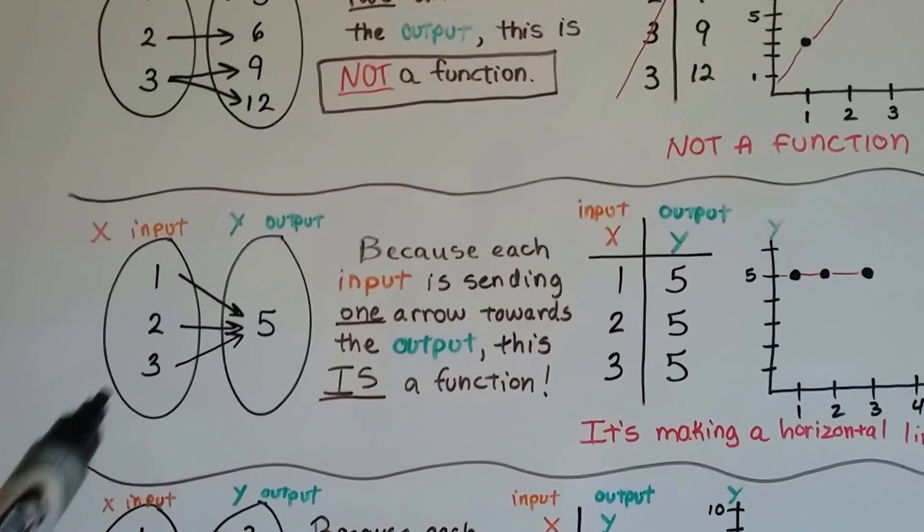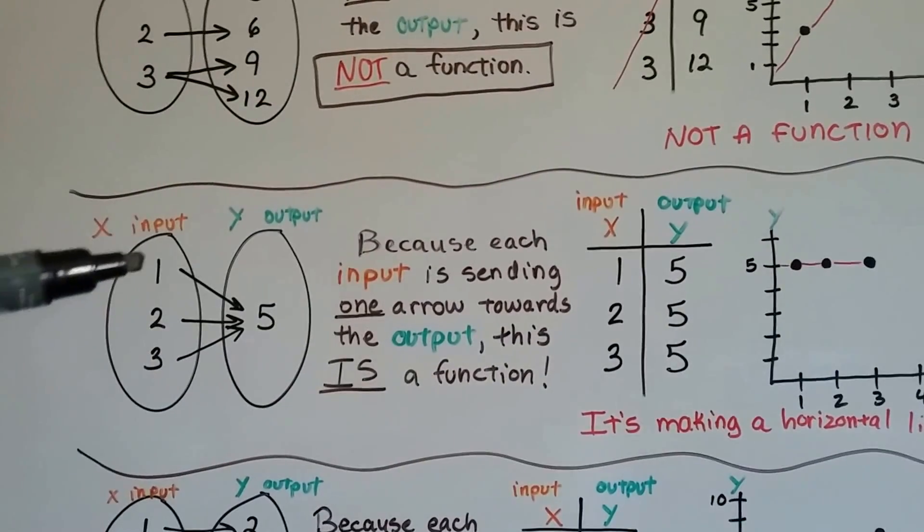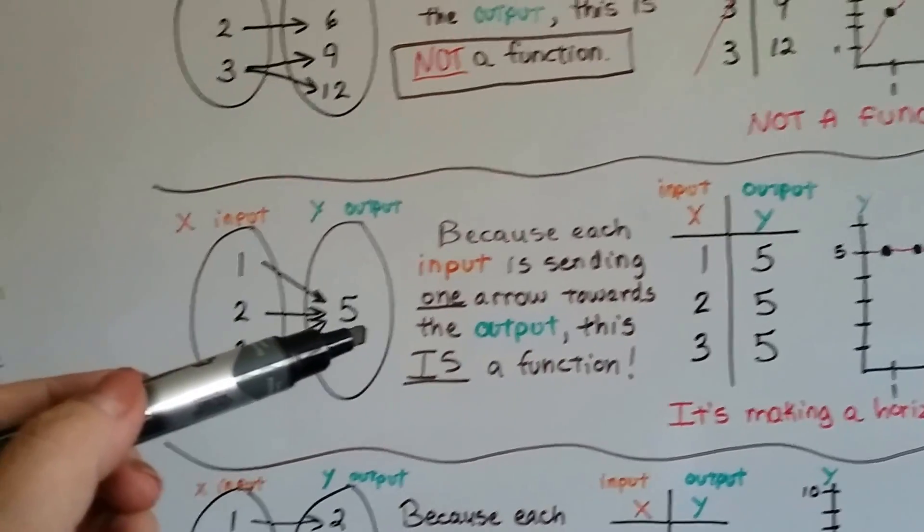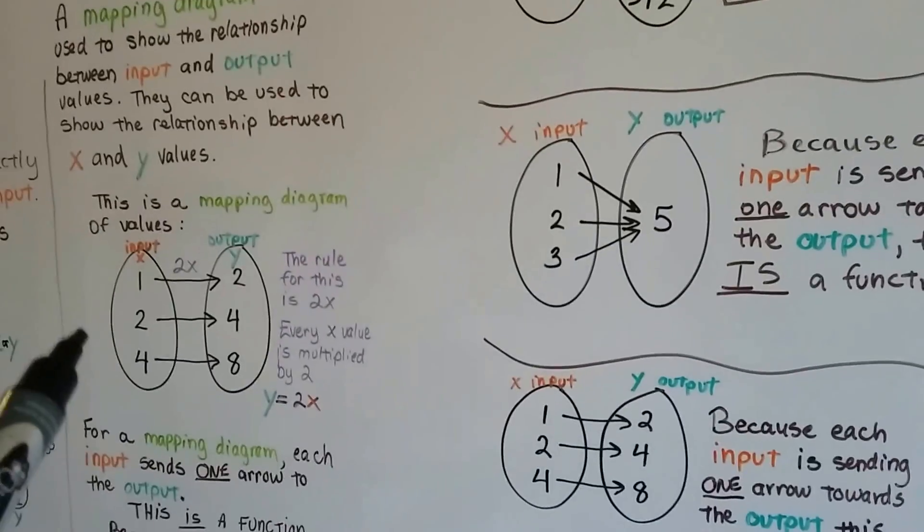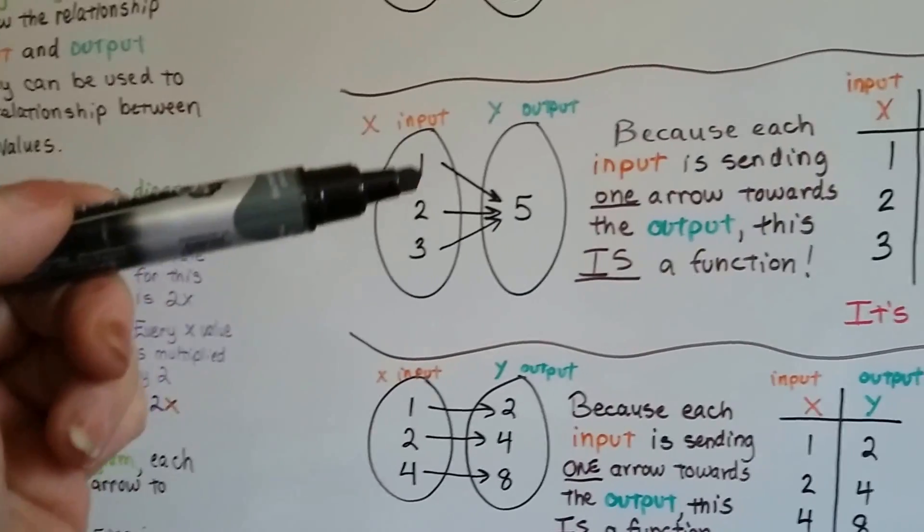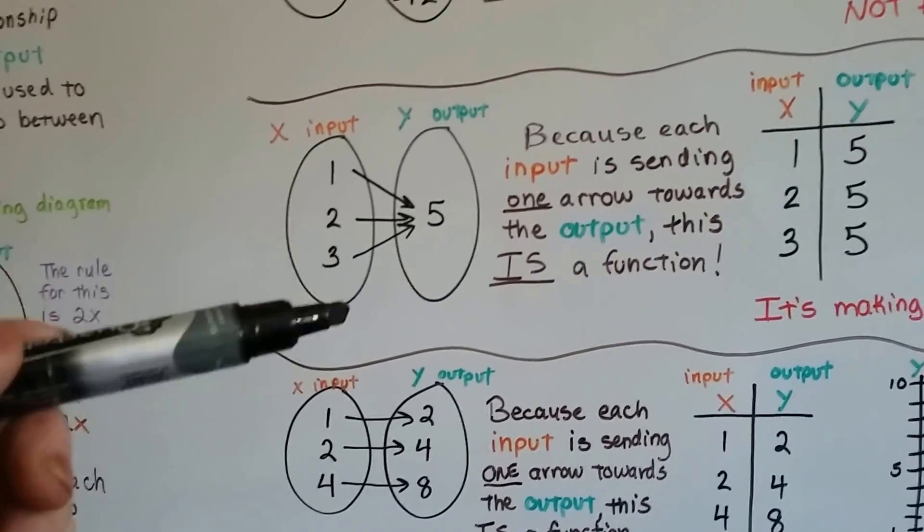Now look at this one. Now these three arrows are all going to the same number. Well, is each one sending one arrow? Are each one of these input numbers sending one arrow?